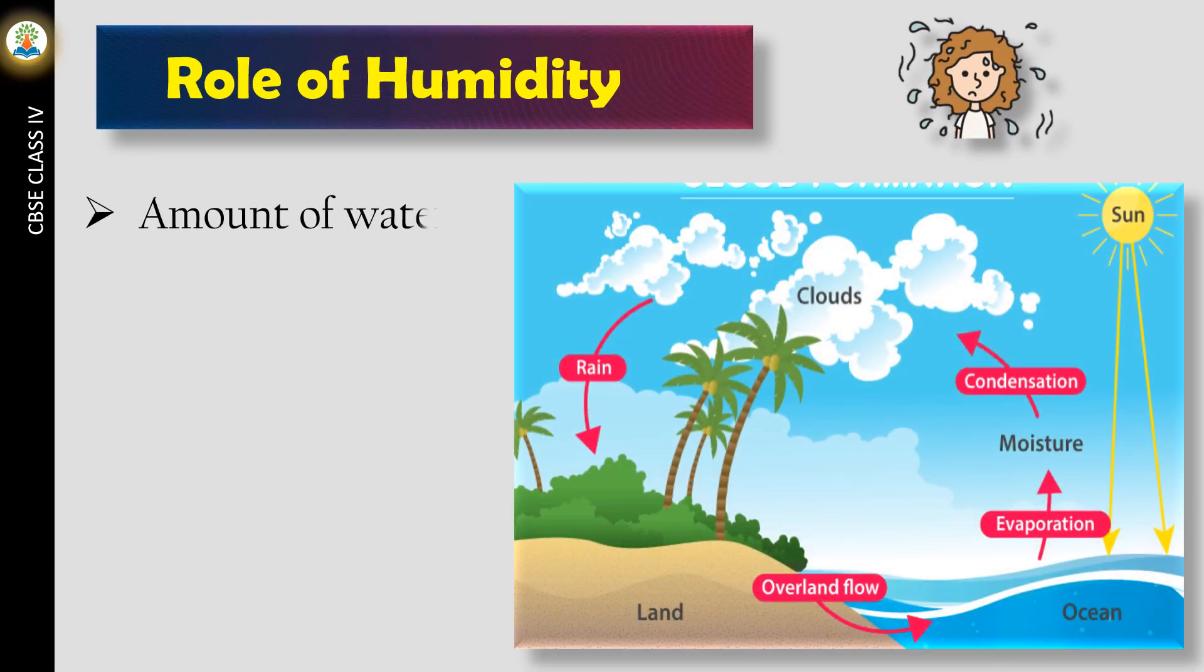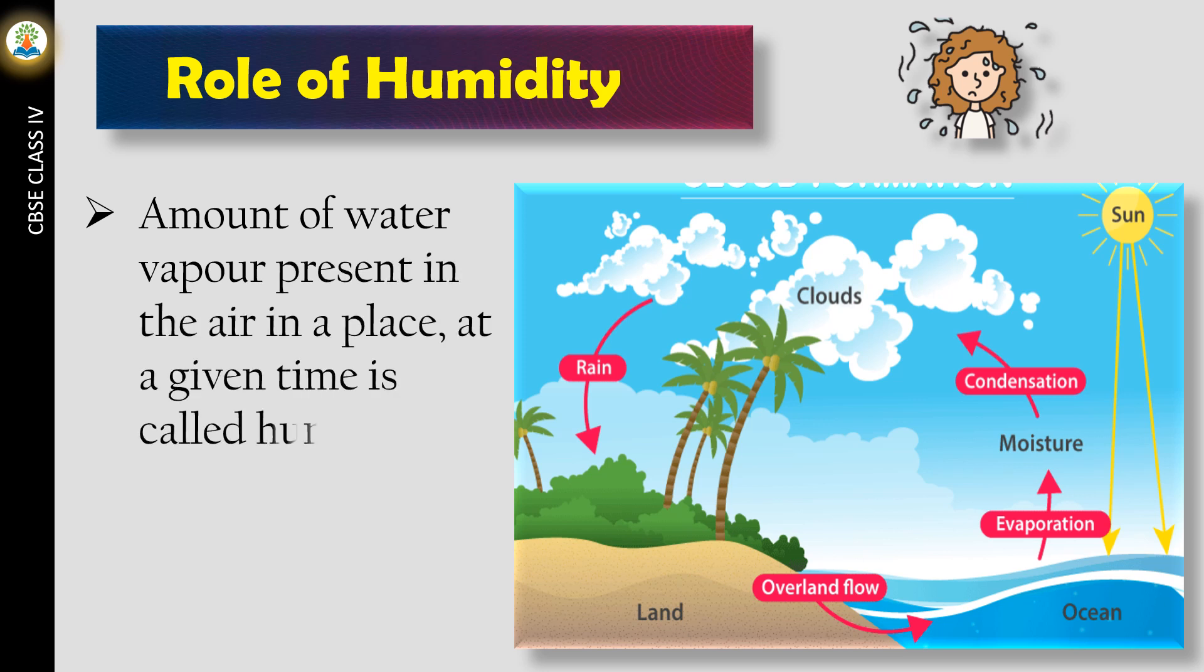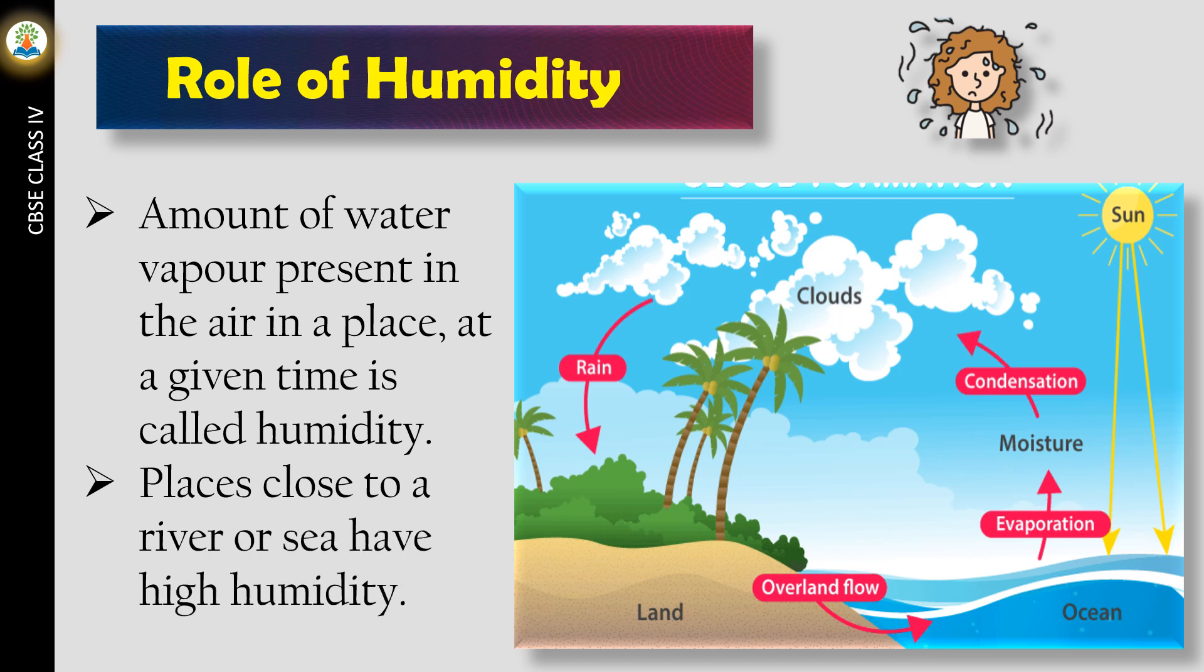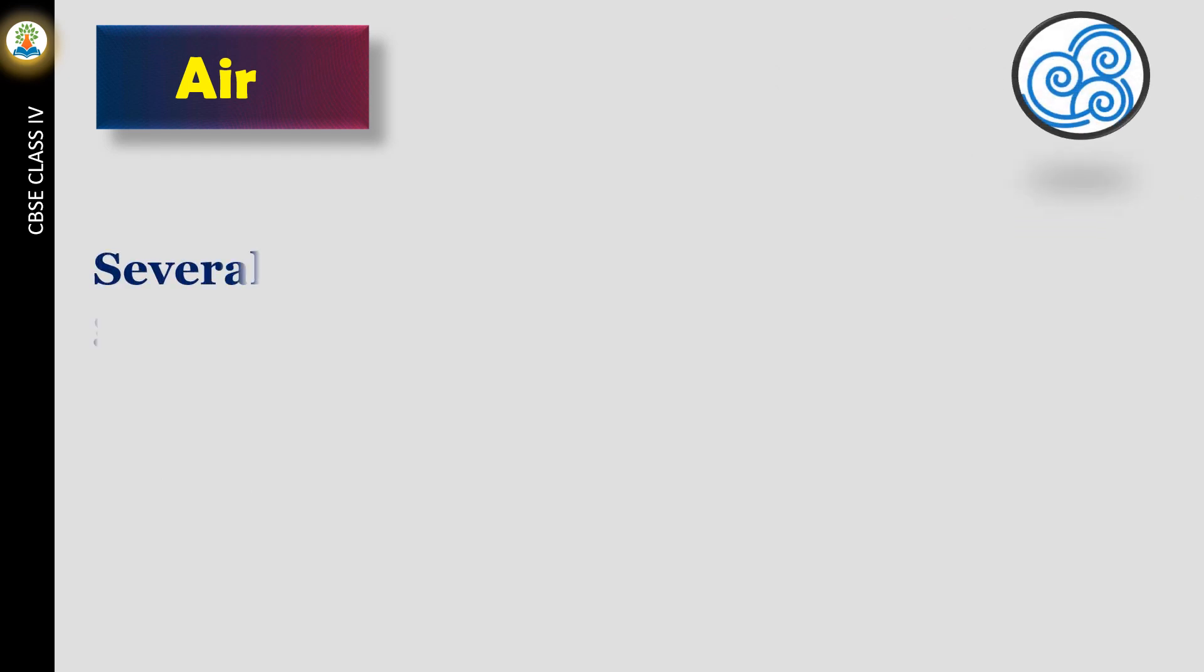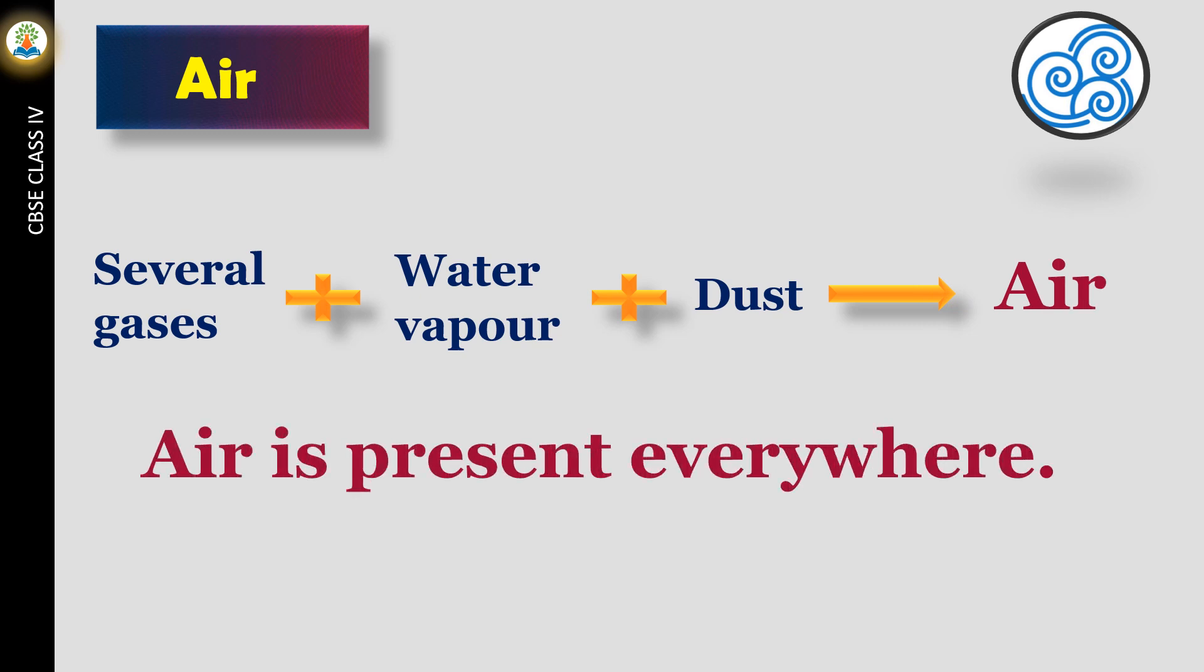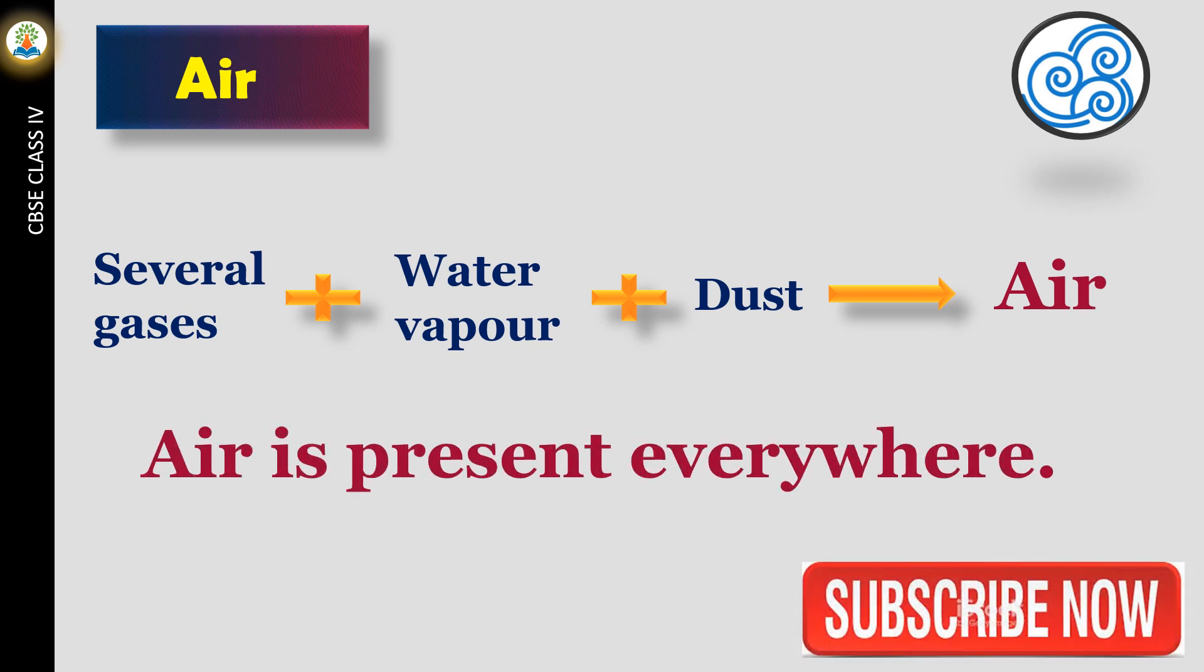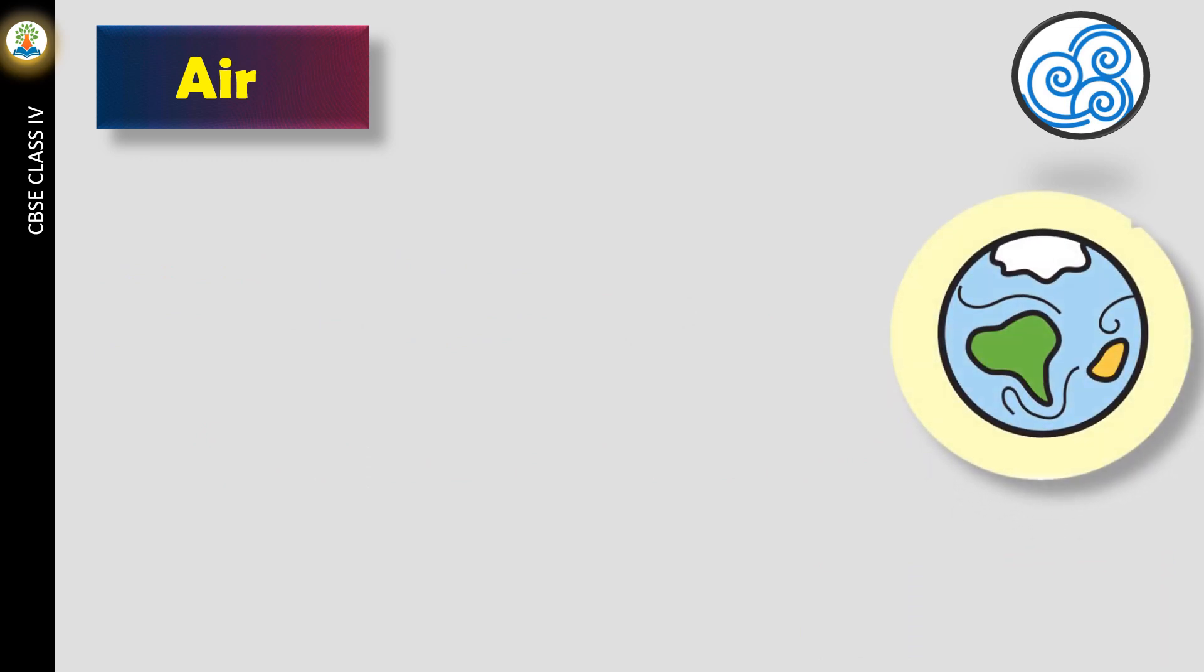Amount of water vapor present in the air in a place at a given time is called humidity. Places close to a river or sea have high humidity. The mixture of several gases, water vapor, and dust forms air. Air is present everywhere. Earth is surrounded by a blanket of air called atmosphere.